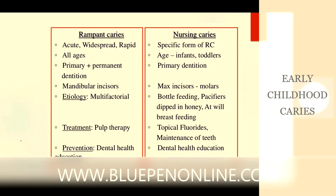With rampant caries, there will be sudden spread and you will suddenly notice it. It will be found in all ages, in primary teeth as well as permanent dentition. The main difference is that mandibular incisors will also be involved. It has a multifactor etiology, the treatment indicator is usually pulp therapy, and prevention can be by dental health education.